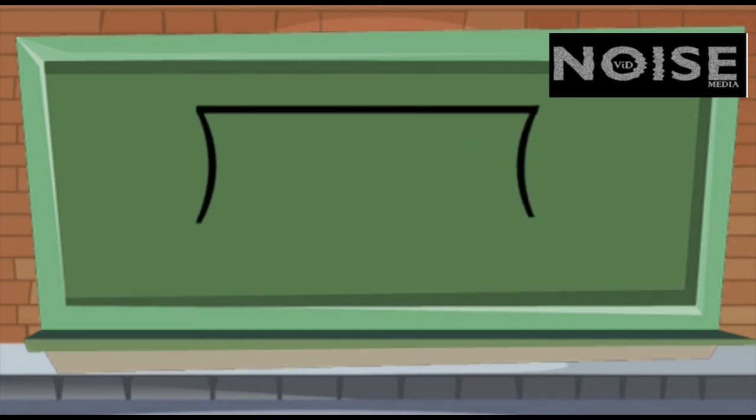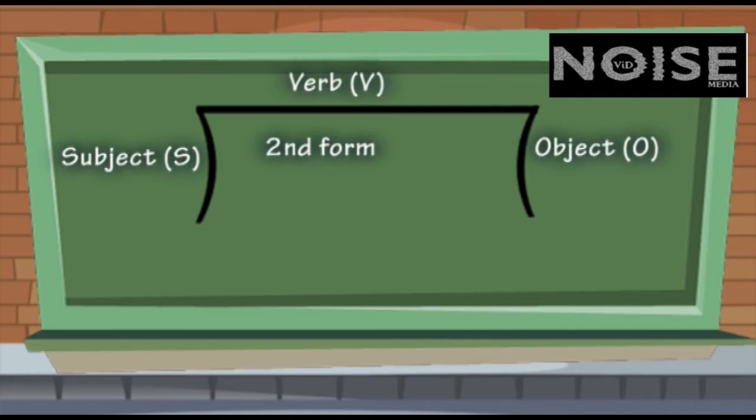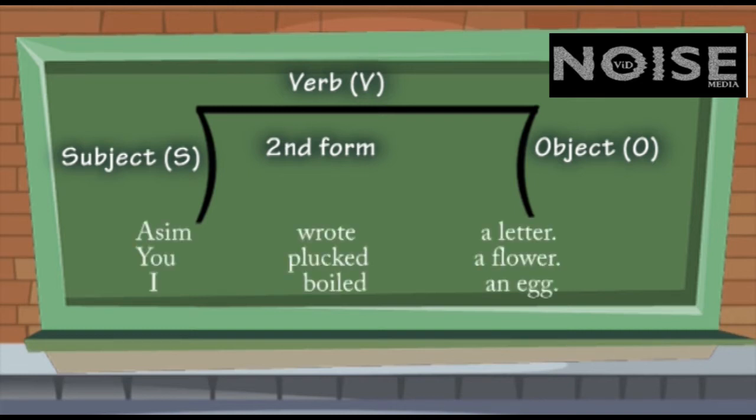SVO. S means subject, V means verb, and O means object, that is optional here. The sentences are: Asim wrote a letter, You plucked a flower, I boiled an egg.